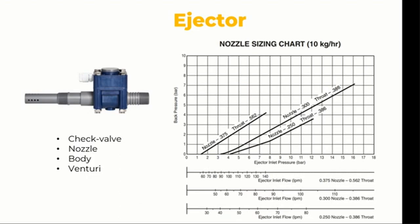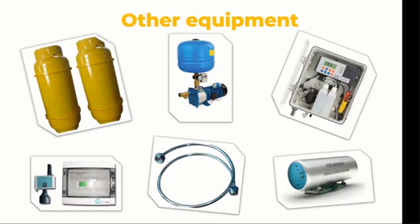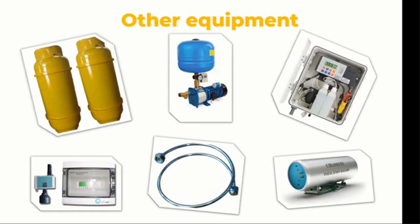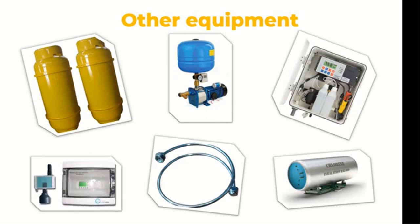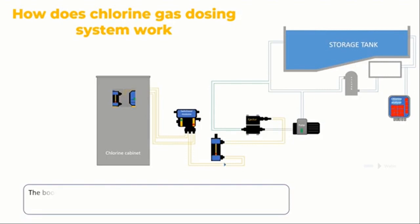Gas chlorination systems also include the following equipment, which can be covered in more detail in an upcoming video: chlorine gas tanks, booster pumps, residual chlorine measuring devices, gas leak detectors, lifting accessories for chlorine gas tanks, and flexible connection hoses. Let's now study the functioning of the chlorine gas dosing system.